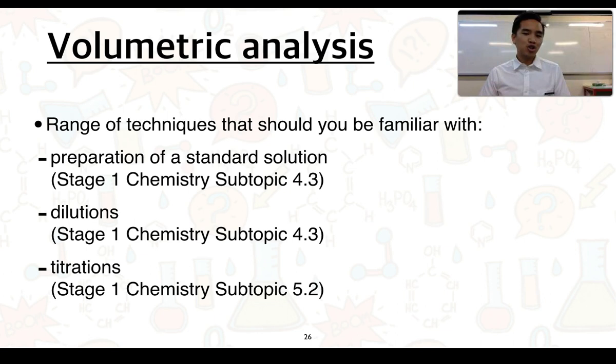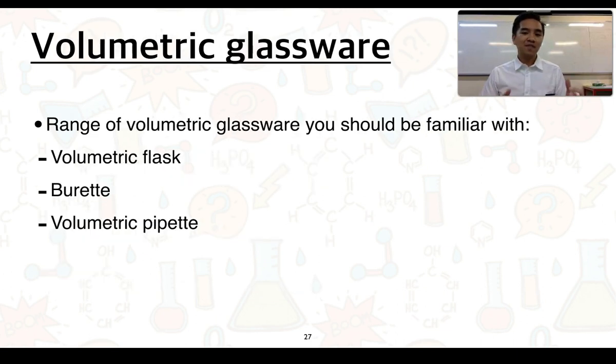So some of the techniques that you should already be familiar with and again I've linked this into the stage 1 course are things such as the preparation of a standard solution so this is back in subtopic 4.3, carry out dilutions again back in subtopic 4.3, and performing titrations which we did cover in subtopic 5.2 which related to reactions of acids and bases. So the glassware that you should be familiar with using already are these here. We've got a volumetric flask, burette and a volumetric pipette. So I'm going to introduce to you some of this glassware and their purpose and what we might need to know in regards to their use.